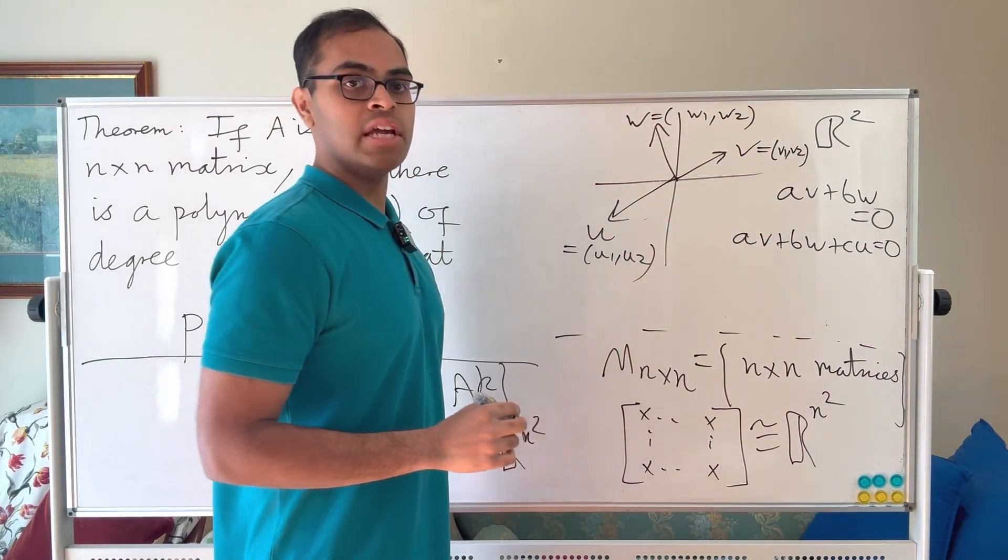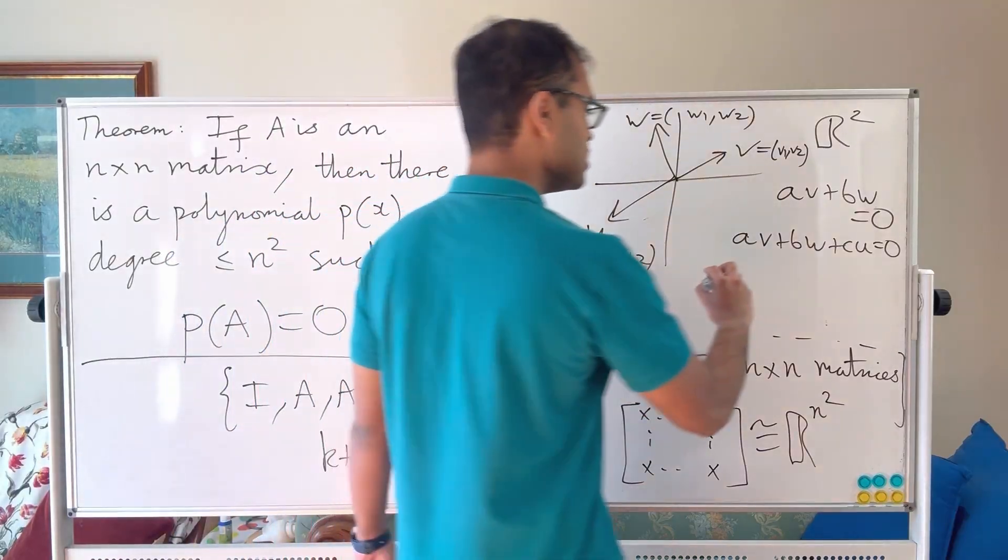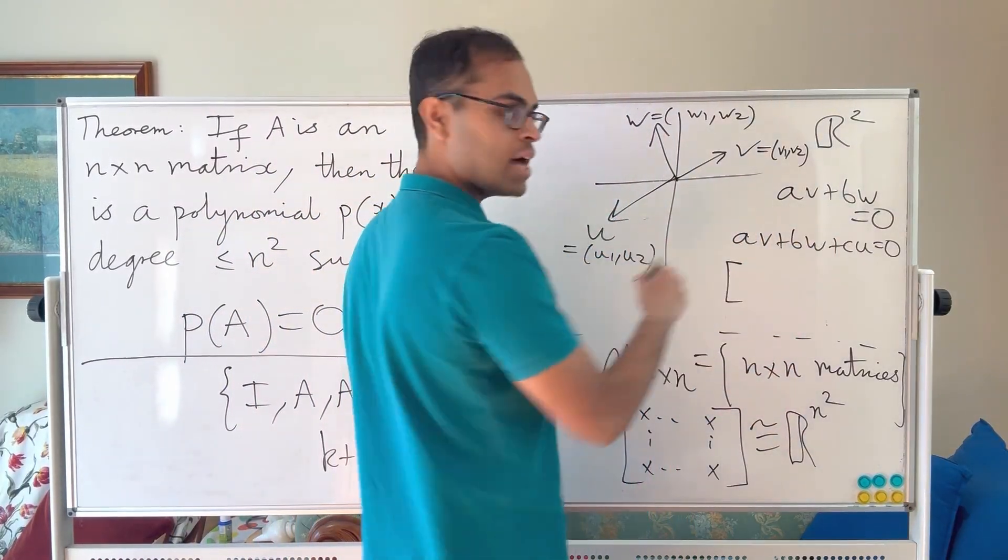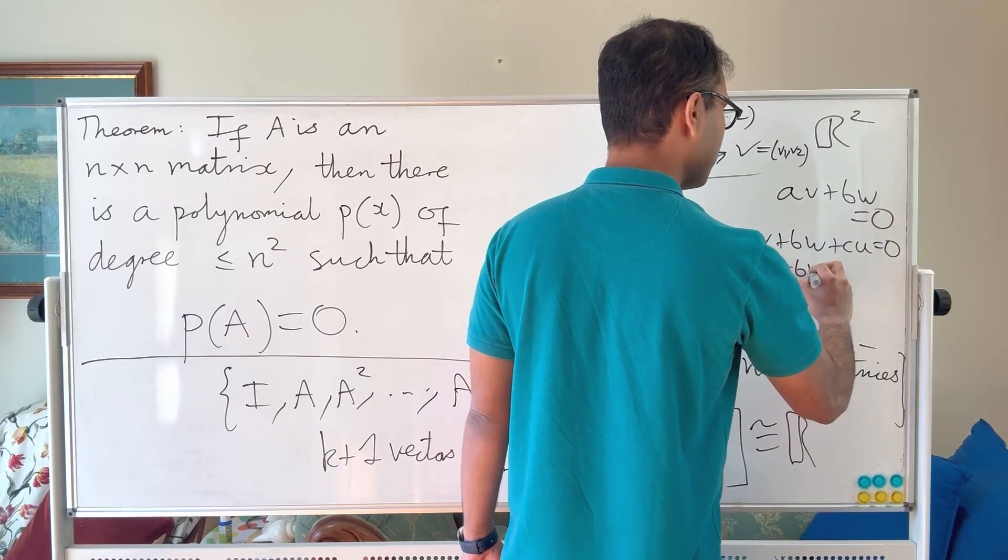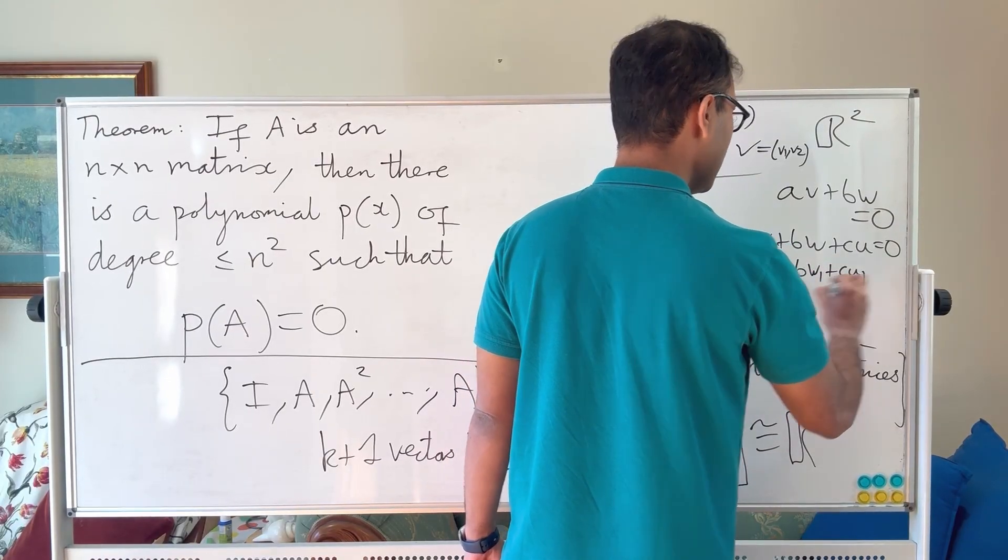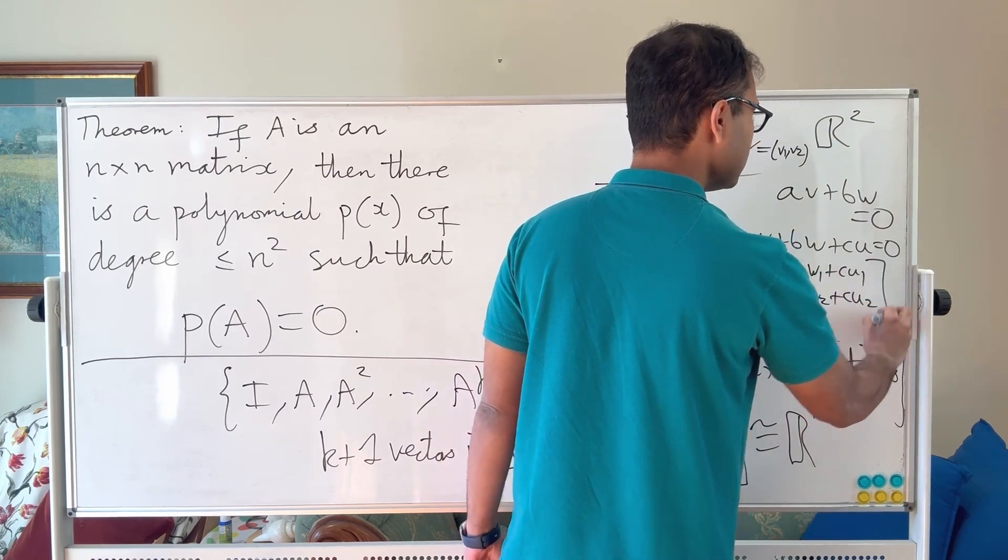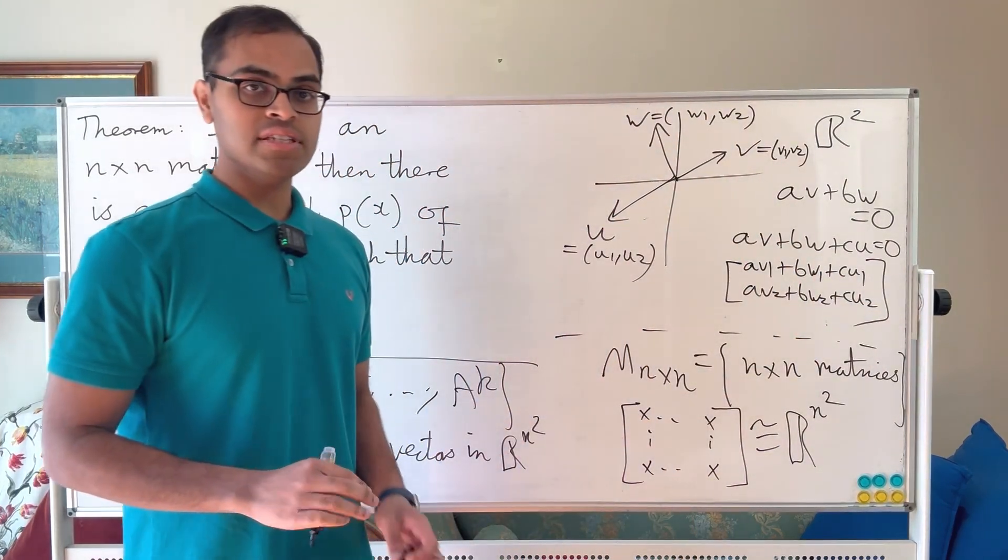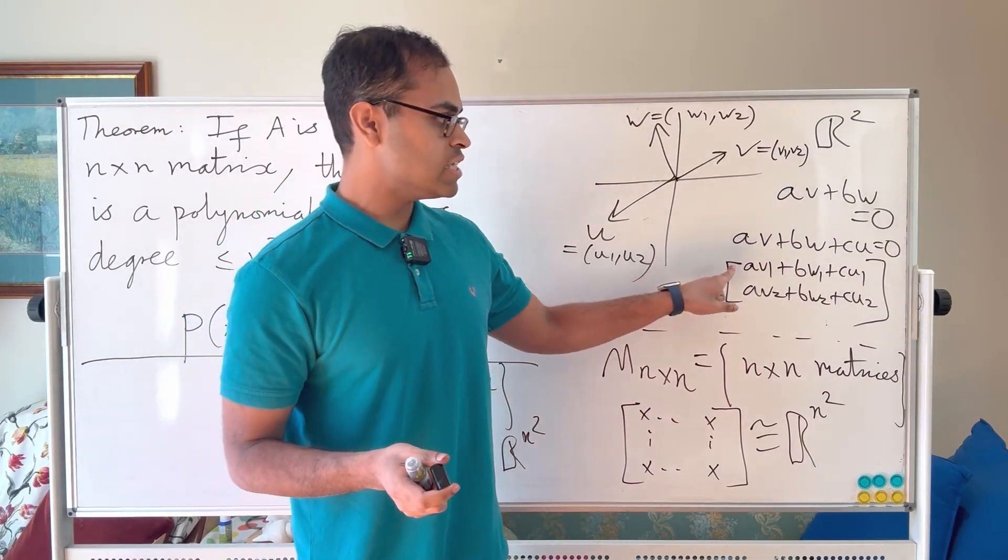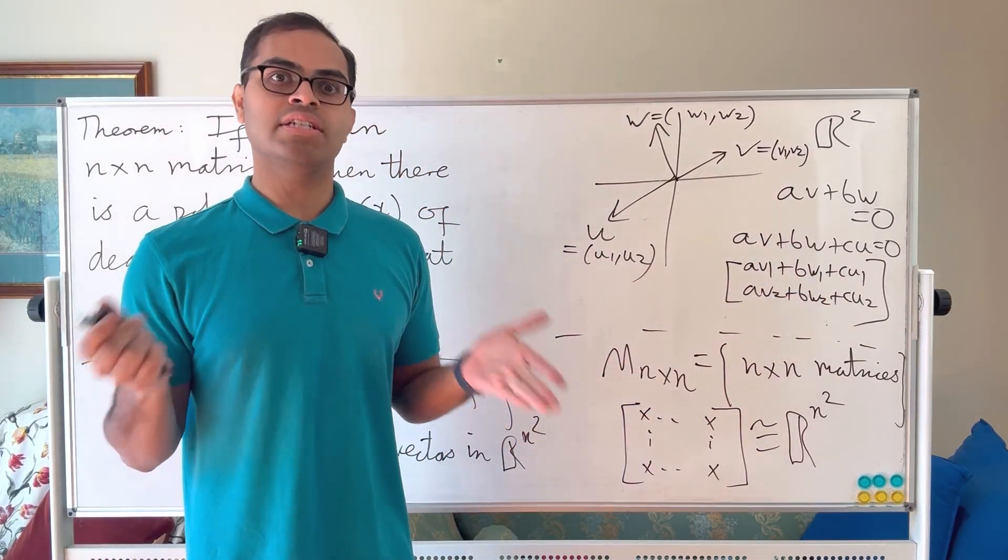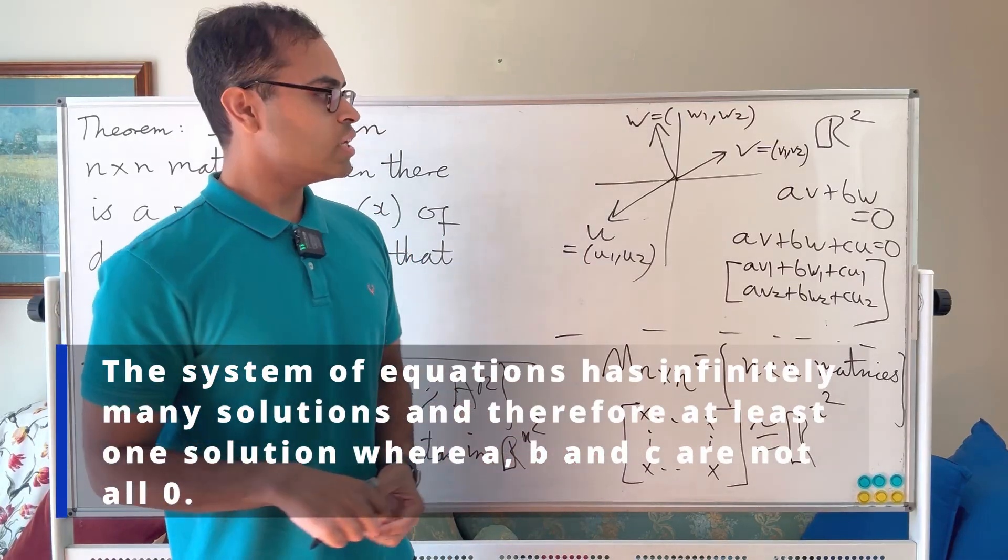The equations are going to be, you could think about the sum, think about its coordinates. You're going to have a v1 plus b w1 plus c u1, and you're going to have a v2 plus b w2 plus c u2. So if you want to set this equals to 0, you want to find a, b and c that solve it, you've got two equations and you've got three variables and you can always solve such a system of equations. That's coming down to the theory of equations.